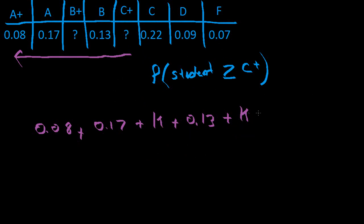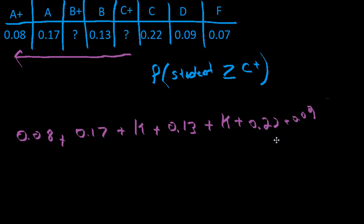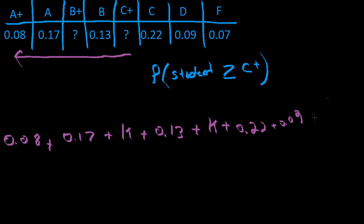So past C+, we're going to have to continue adding 0.22 and 0.09, as well as 0.07. But I'm running out of room, so I'm just going to grab all of these, drag them just over there, and so add 0.07.